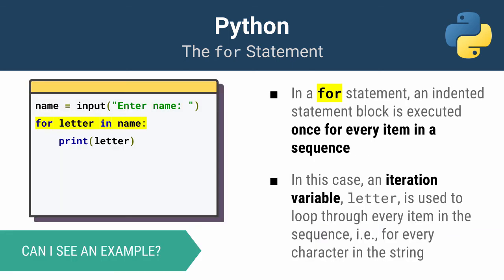Here's my program. It starts with a variable called name assigned to whatever the user inputs. Then comes my for statement. Notice how it says 'for letter in name' — in this case, letter is what's called an iteration variable, a special variable that allows us to go through our loop. For every letter, I will print it out in the indented statement block.